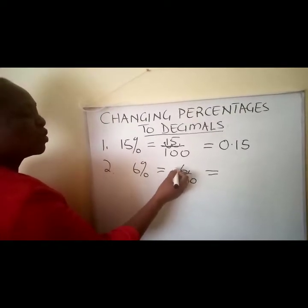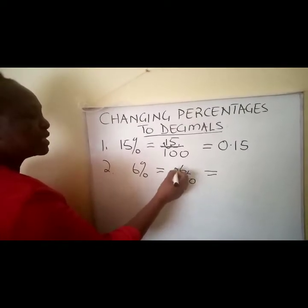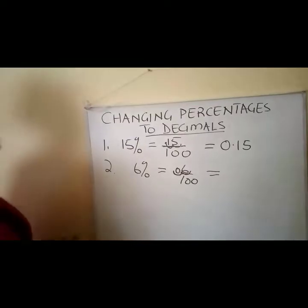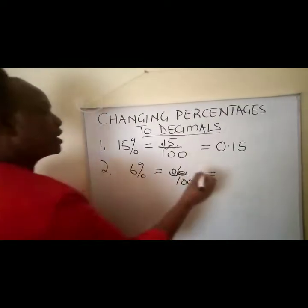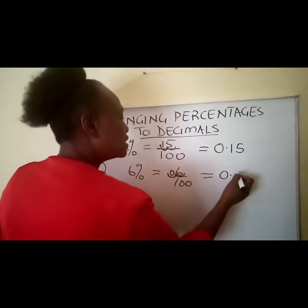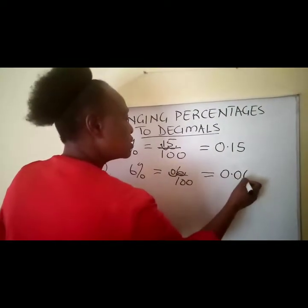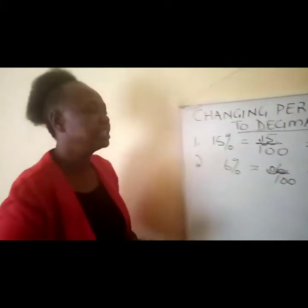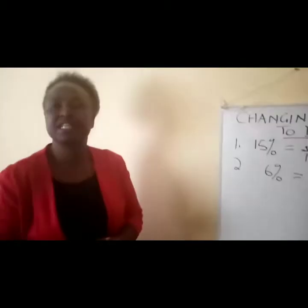We actually put a 0 to hold that place. So it's going to be 0.06. That is how we change it to a decimal.